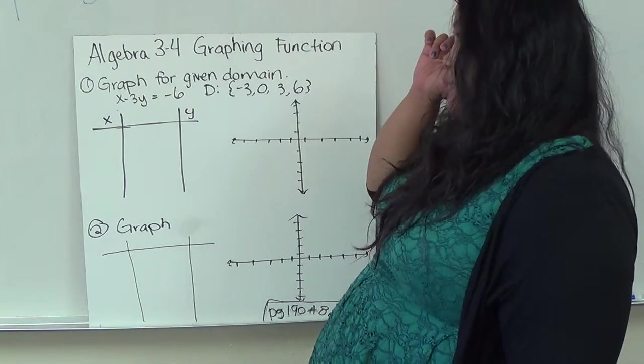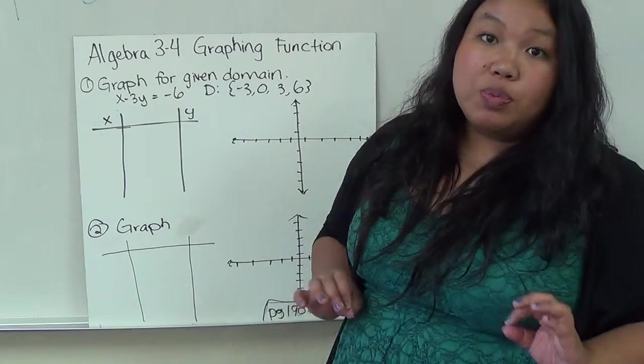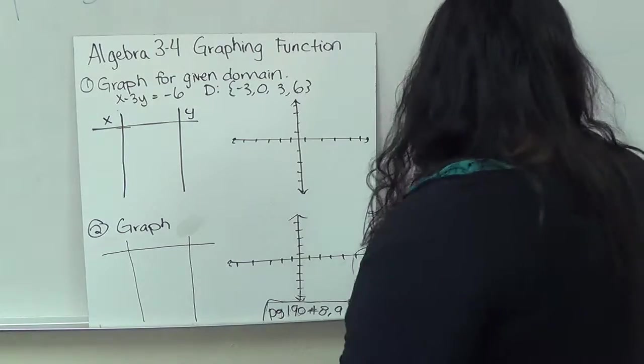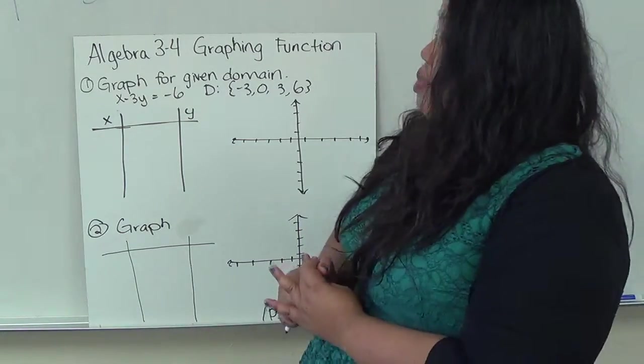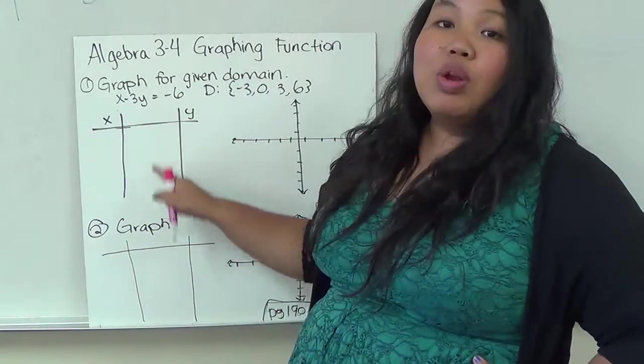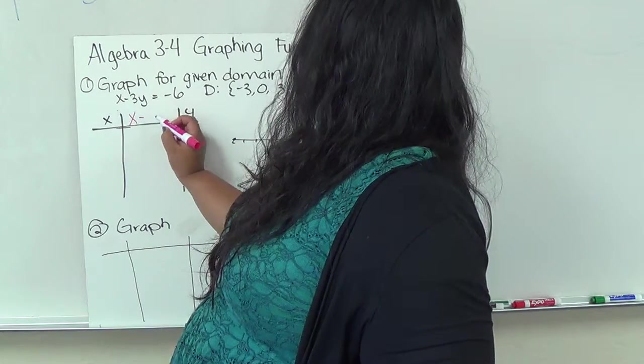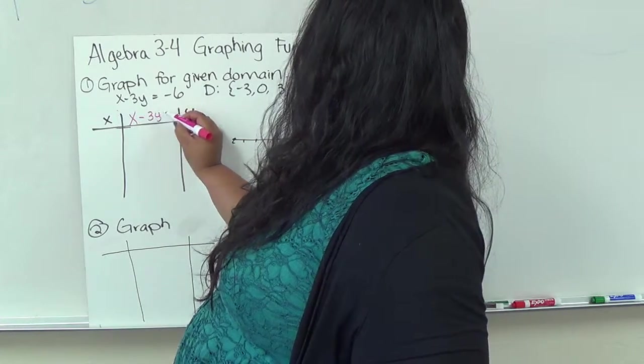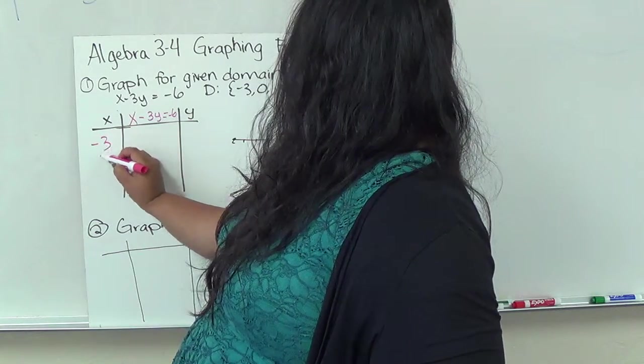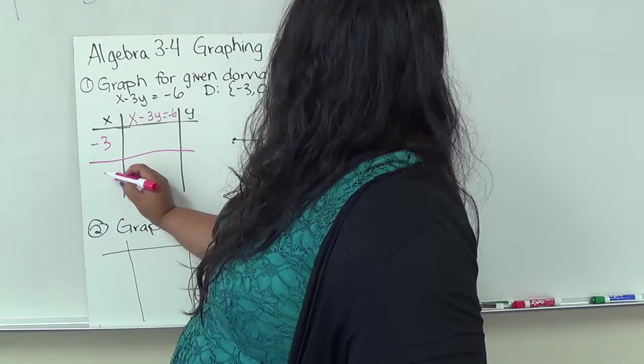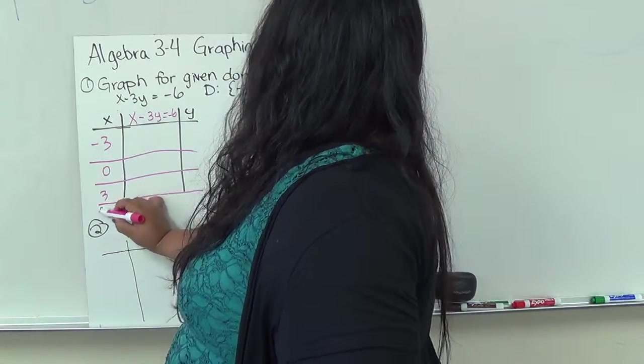Before we graph them, we're going to create a table so we know which points to graph and then we're going to connect the points. So we'll start with these tables that you've probably seen before and this in the middle one, remember, is your work. So I'm going to take my equation and I'm going to put it in for work. And it wants me to do it for negative 3, for 0, for 3, and 6.